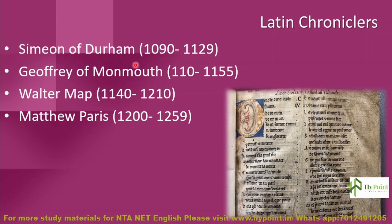Some of the major Latin chroniclers of the Anglo-Norman period are: Simon of Durham (1090–1126), Geoffrey of Monmouth (approximately 1110–1155), Walter Map (1140–1210), and Matthew Paris (1200–1259). Please remember at least Geoffrey of Monmouth and Simon of Durham, as their names have appeared in question papers. Walter Map and Matthew Paris are also important Latin chroniclers of this period.